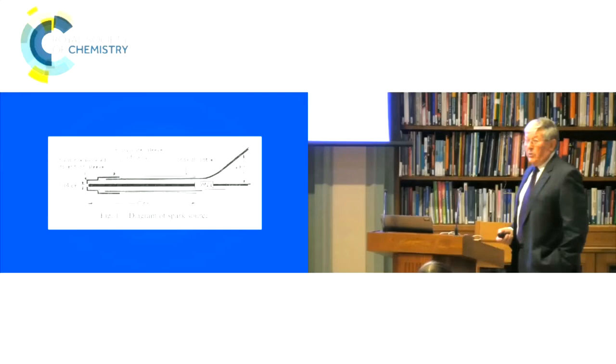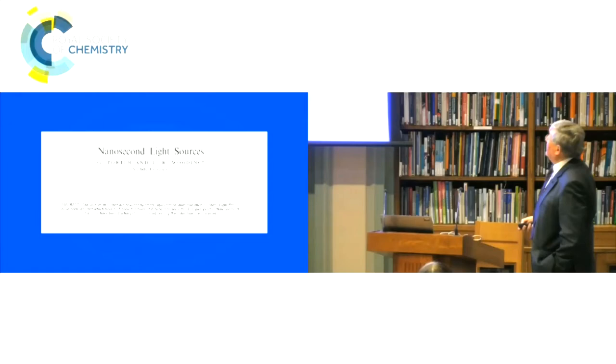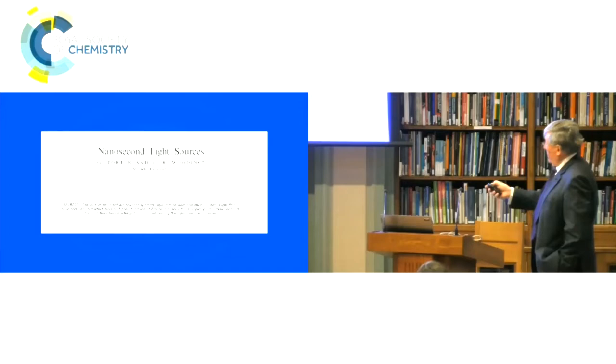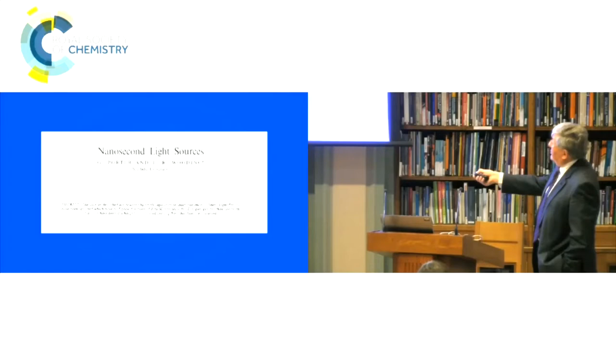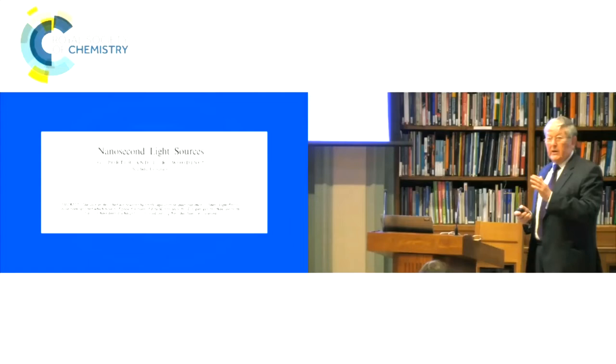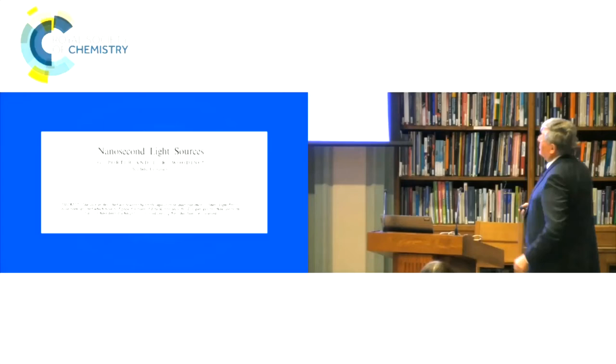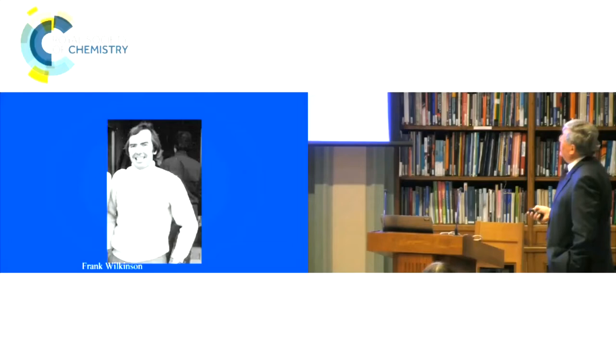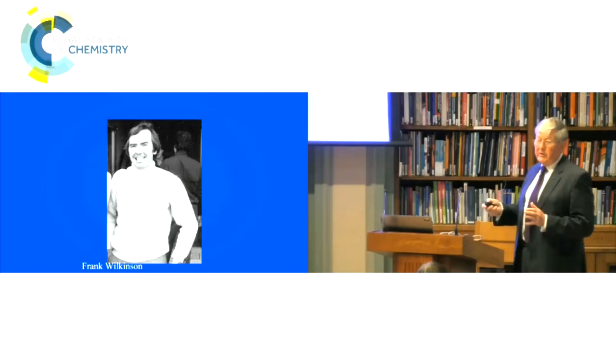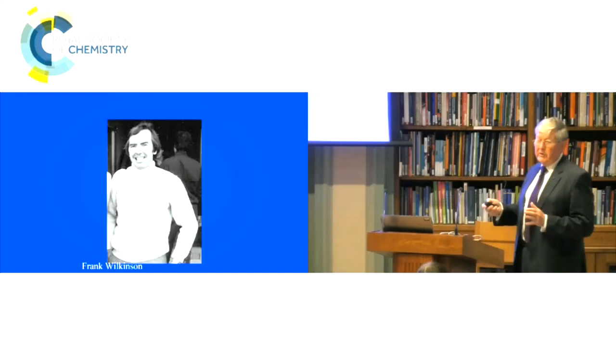He spent a lot of time, this is in Sheffield, developing the spark source, which would give you a very, very short pulse. These became very useful in a technique which I'll describe shortly. So nanosecond light sources in Sheffield, he was able to make light sources with a duration of about 8 to 50 nanoseconds, which is really quite remarkable. Typically, to get a large output, you would be constrained to microseconds. Microsecond flash is what he really developed in Sheffield. But he was able to show you could go a bit shorter than that. Not much, but with difficulty you could.